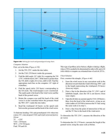Refer to Figure 4-38 for a graphic solution. Computer solution (Figure 4-39): 1. Set TH 270° under the true index. 2. Set TAS 230 knots under the grommet. 3. Find the drift angle — 10° right — by comparing TH (270°) with track (280°). If track is greater than TH, drift is right; if less, drift is left. Find the 10°-right track line on the computer. 4. Find the speed circle — 215 knots — corresponding to GS. The wind triangle is now constructed. The mark made is the head of the wind vector and the head of the ground vector.